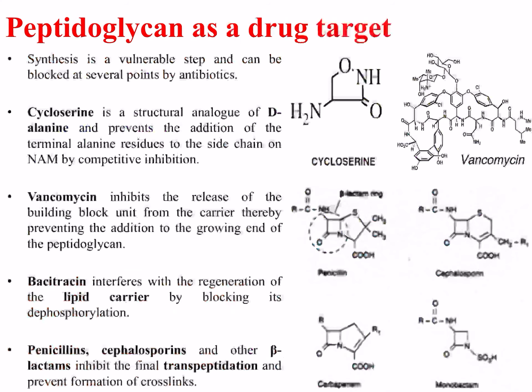Peptidoglycan synthesis is a vulnerable step and can be blocked at several points by various antibiotics. Cycloserine, a structural analog of D-alanine which is one of the terminal amino acids in the pentapeptide hanging off the NAM residues, prevents the addition of the terminal alanine to the side chain by competitive inhibition. Vancomycin inhibits the release of the building block unit from the lipid carrier.